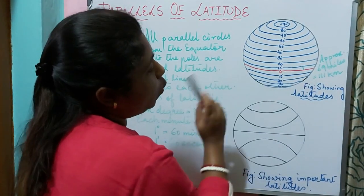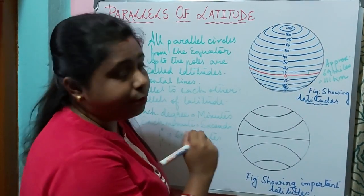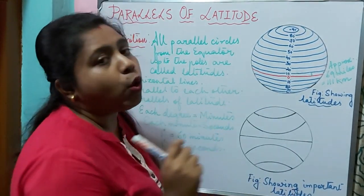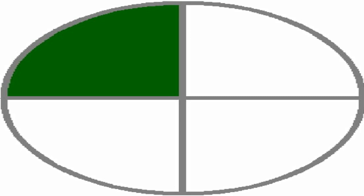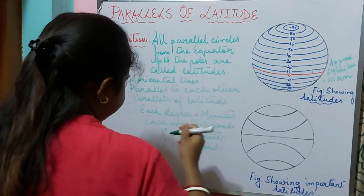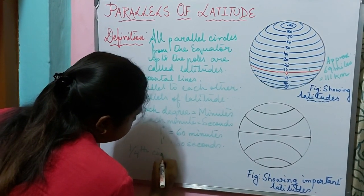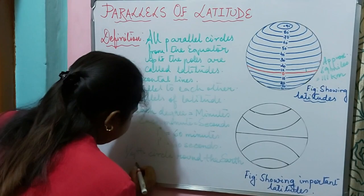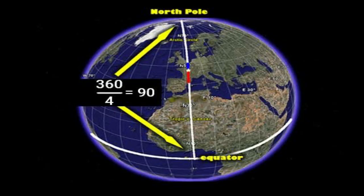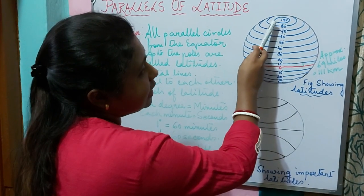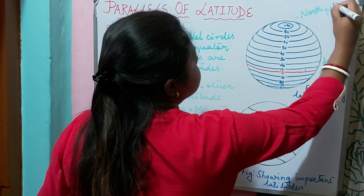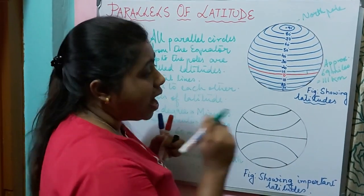Since the distance from the equator to either of the two poles — north or south — is one-fourth of a circle round the earth, that means one-fourth of 360 degrees, which equals 90 degrees. Thus, 90 degree north latitude marks the North Pole.